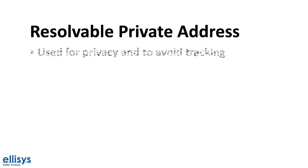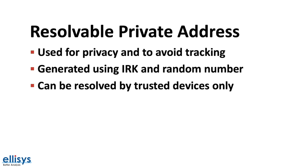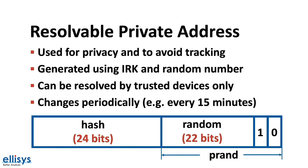A resolvable private address is used for privacy purposes and to avoid tracking of Bluetooth devices. It is generated using a key called the IRK (identity resolving key) and a random number. Only trusted devices that have bonded with this device can resolve it. This address changes periodically — the Bluetooth specification recommends changing it every 15 minutes. The address is made up of 0 and 1 in the most significant bits, the next 22 bits are random, and these 24 bits are collectively referred to as the PRAND. The remaining 24 bits represent a hash value generated using the PRAND and the IRK.